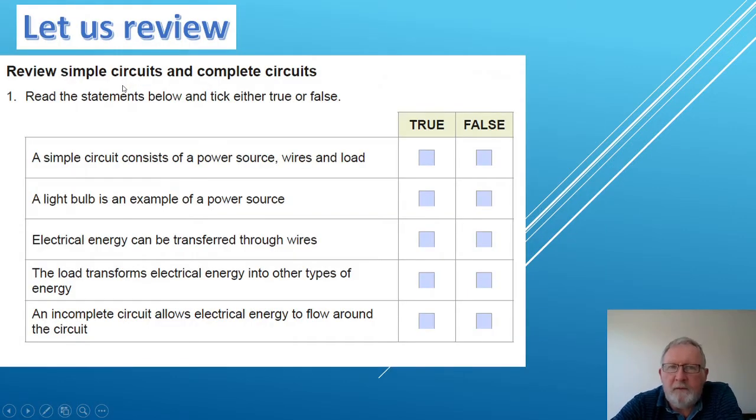Okay let's revise what we learned in the previous lesson. So there are five statements and I want you to think about whether each of those is true or false. You can just work with me on this one. So the first statement says a simple circuit consists of a power source, wires and a load. True or false?